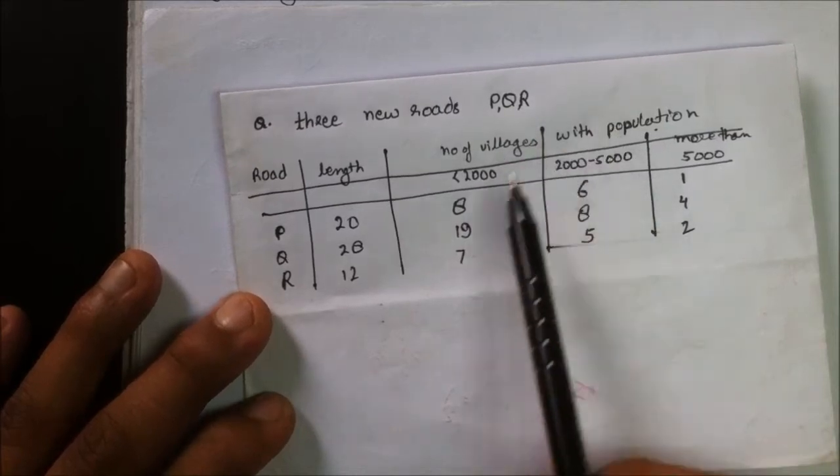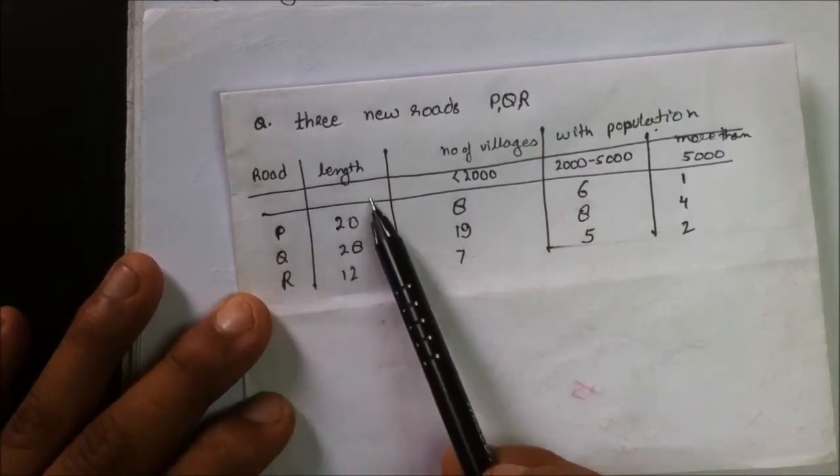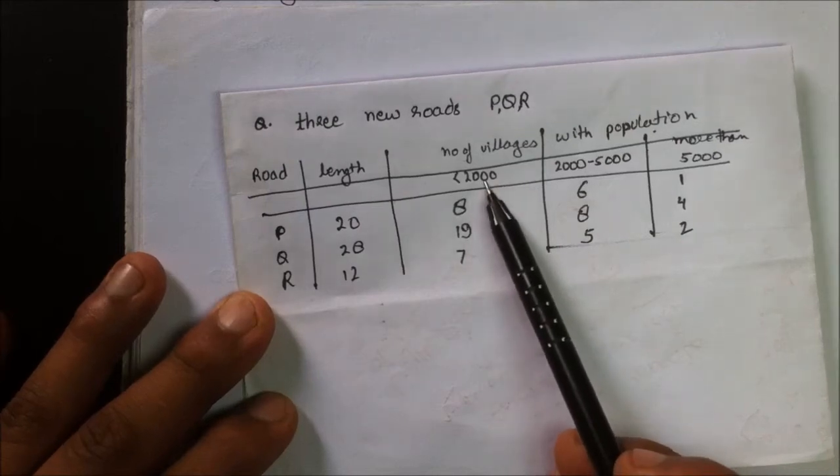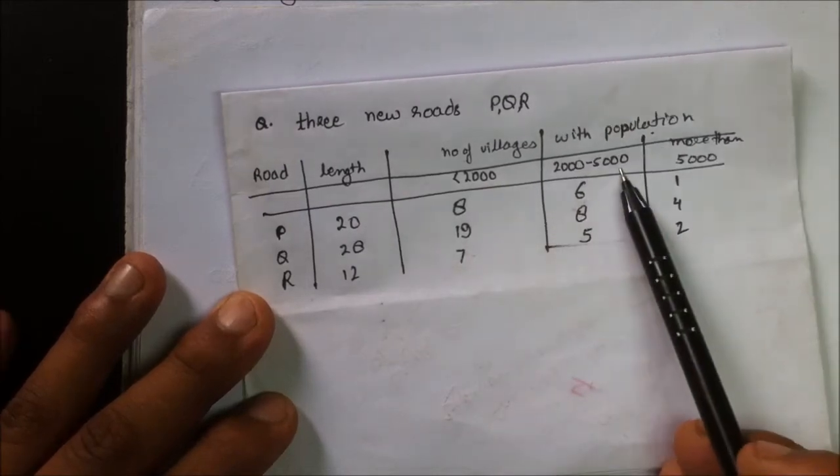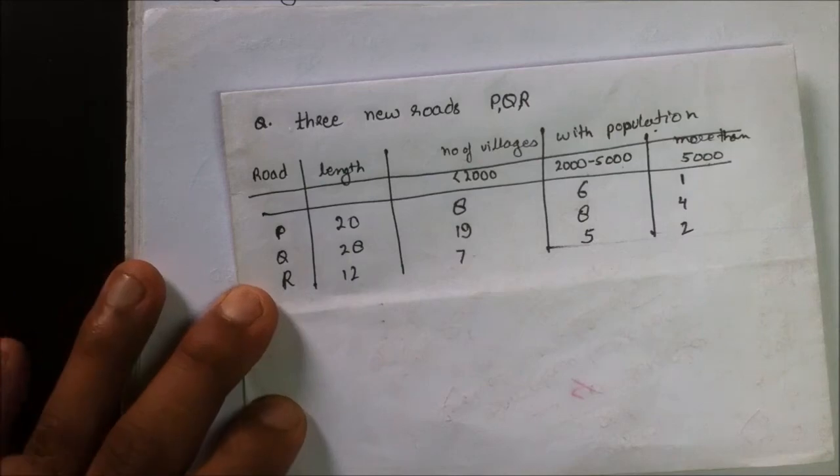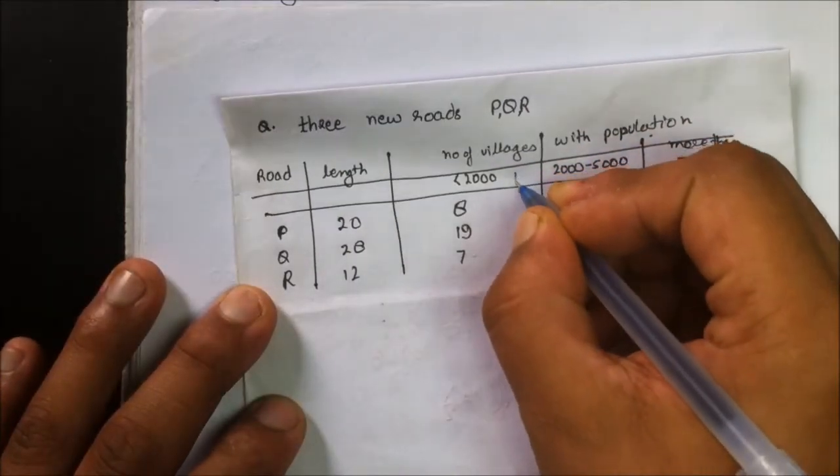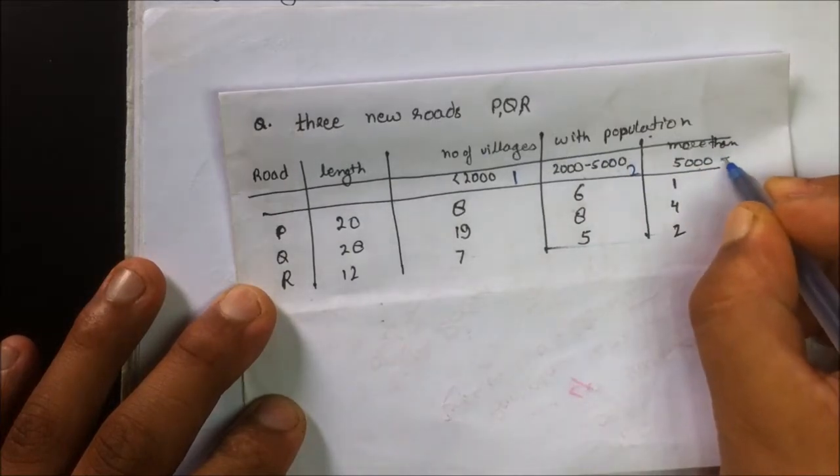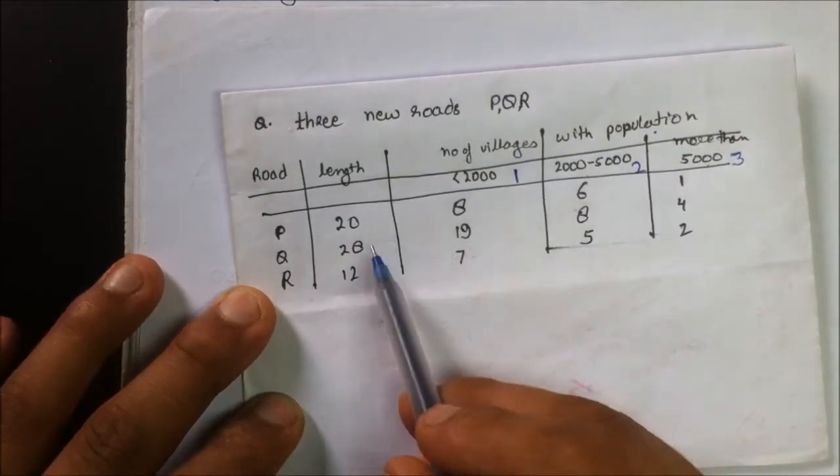For the question of the utility value, I am having three new roads P, Q, and R with lengths 20, 28, and 12 respectively, and number of villages having population less than 2000, 2000 to 5000, and more than 5000. The utility values are: less than 2000 gets 1, 2000 to 5000 gets 2, and more than 5000 gets 3.